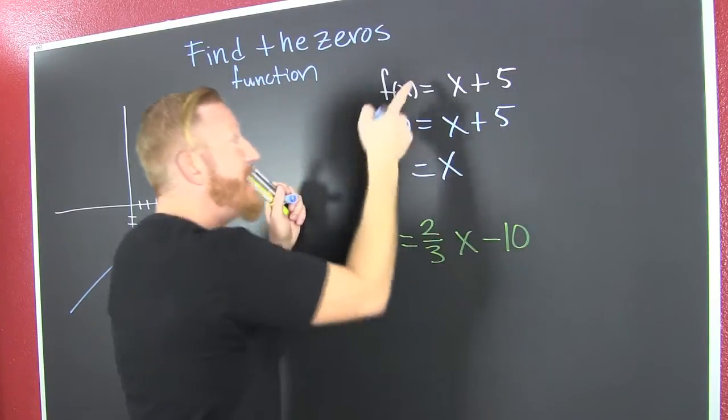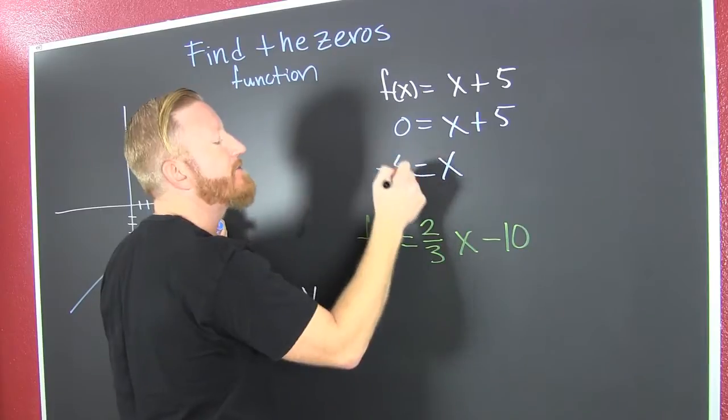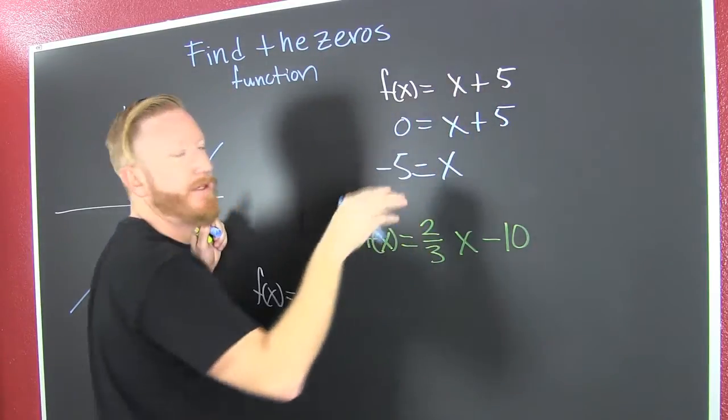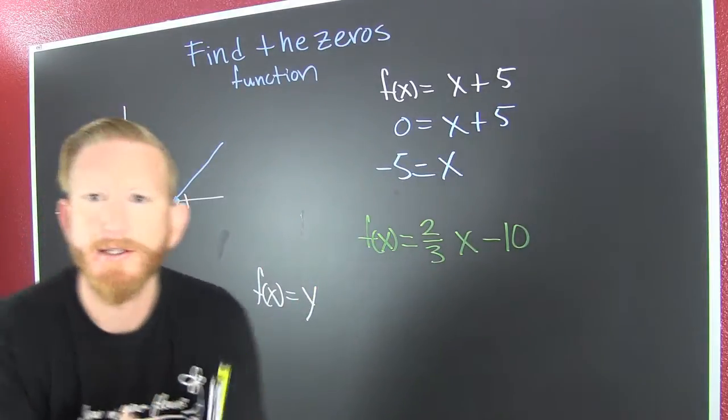Finish him. What makes that function zero? Minus 5. Why? Because when I plug that back up in there, minus 5 plus 5 is what? Not even going to answer that. Now, let's go to another one.